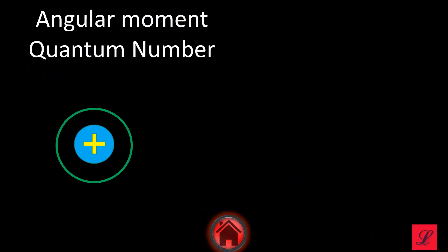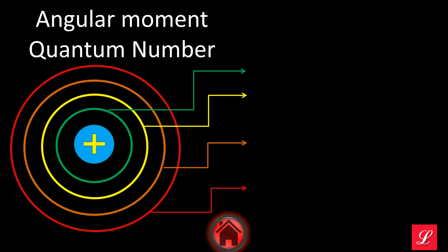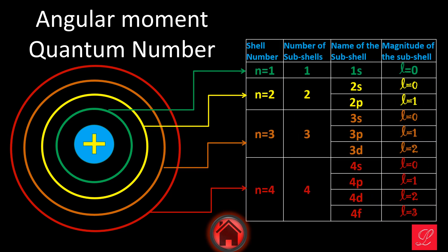Coming to the angular momentum quantum number: for n = 1, number of subshells is 1, the subshell name is 1s, L = 0. For n = 2, there are 2 subshells — 2s and 2p; L = 0 and 1. For n = 3, there are 3 subshells — 3s, 3p, 3d; L = 0, 1, 2. For n = 4, there are 4 subshells — 4s, 4p, 4d, 4f; L = 0, 1, 2, 3. The s, p, d, f values don't change. This is our angular momentum quantum number.